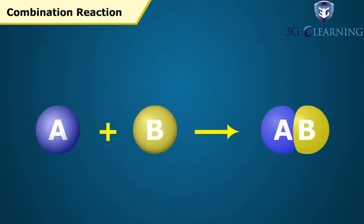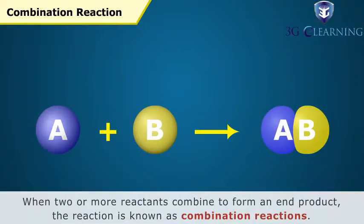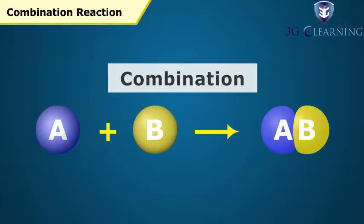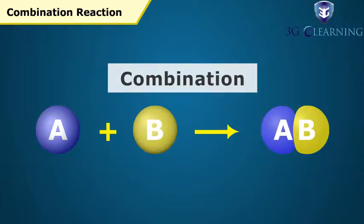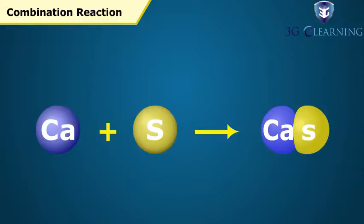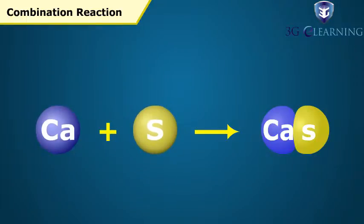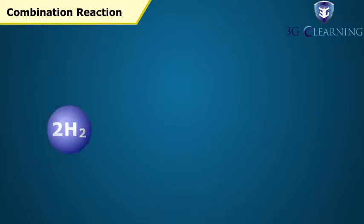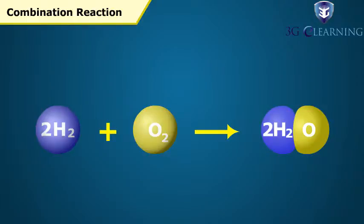Combination Reaction: When two or more reactants combine to form an end product, the reaction is known as Combination Reaction. A plus B equals AB. For example, Calcium and Sulphur combine and form Calcium Sulphide: Ca plus S equals CaS. Hydrogen and Oxygen combine to form water: 2H2 plus O2 equals 2H2O.